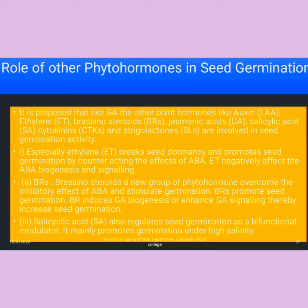Ethylene negatively affects ABA biosynthesis and signaling. Brassinosteroids are a new group of phytohormones that overcome the inhibiting effect of ABA and stimulate germination. Brassinosteroids promote seed germination by inducing GA biosynthesis and enhancing GA signaling, thereby facilitating seed germination. Salicylic acid regulates seed germination as a bifunctional modulator and mainly promotes germination under high salinity conditions.